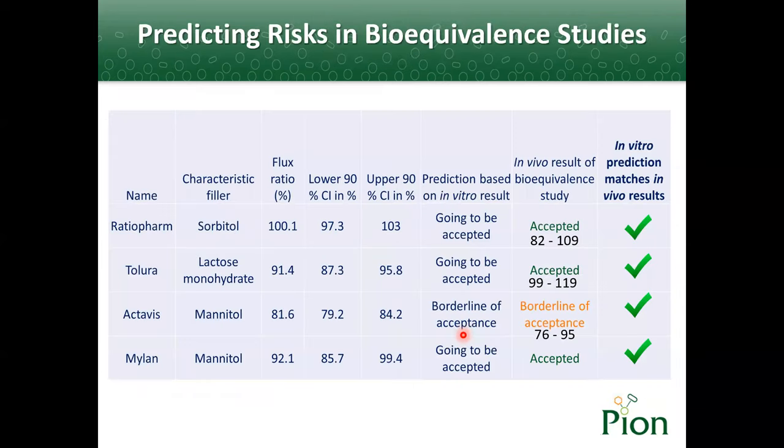This significant difference was clearly shown in the published in vivo results as well. The results showed that by changing excipients, dissolution of telmisartan was not altered significantly, but the flux through the membrane was found to be significantly changed. From the flux results, we predict that Retropharma, Teva, and Mylan are going to be accepted, and they did. And the Actavis was on the borderline of acceptance—it's below 80%. The in vivo results were the same or similar. Actually, it was on the borderline of acceptance.